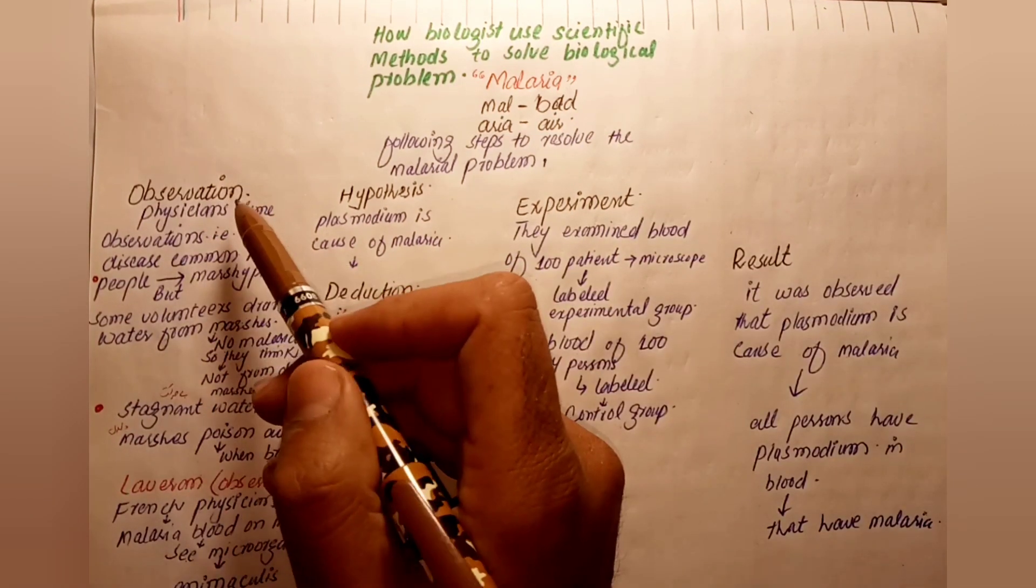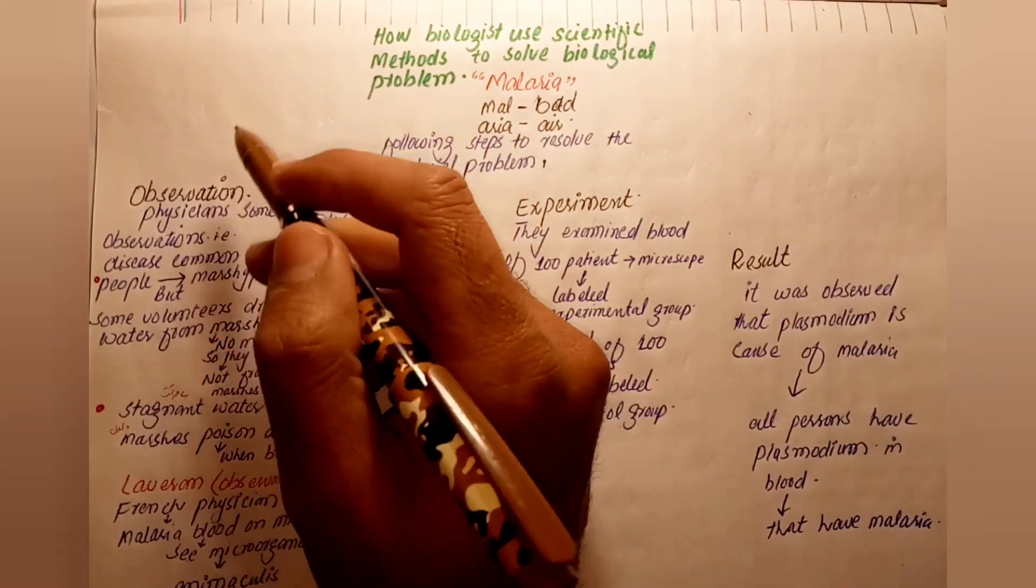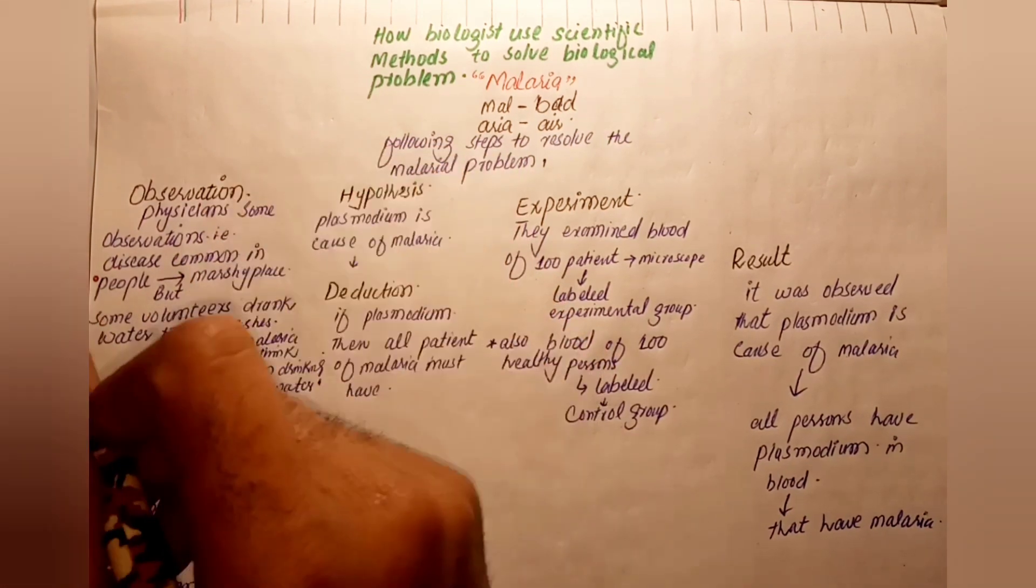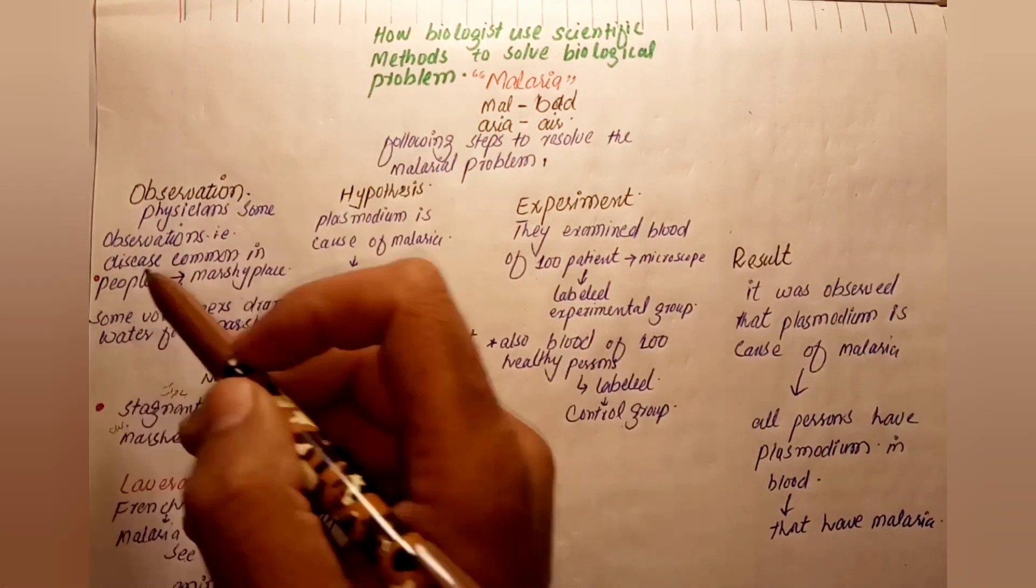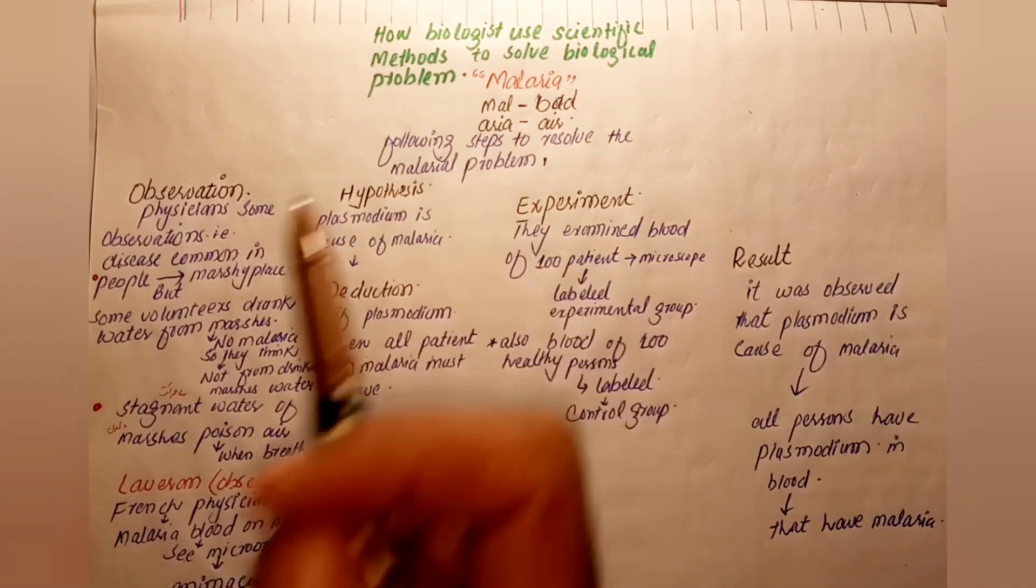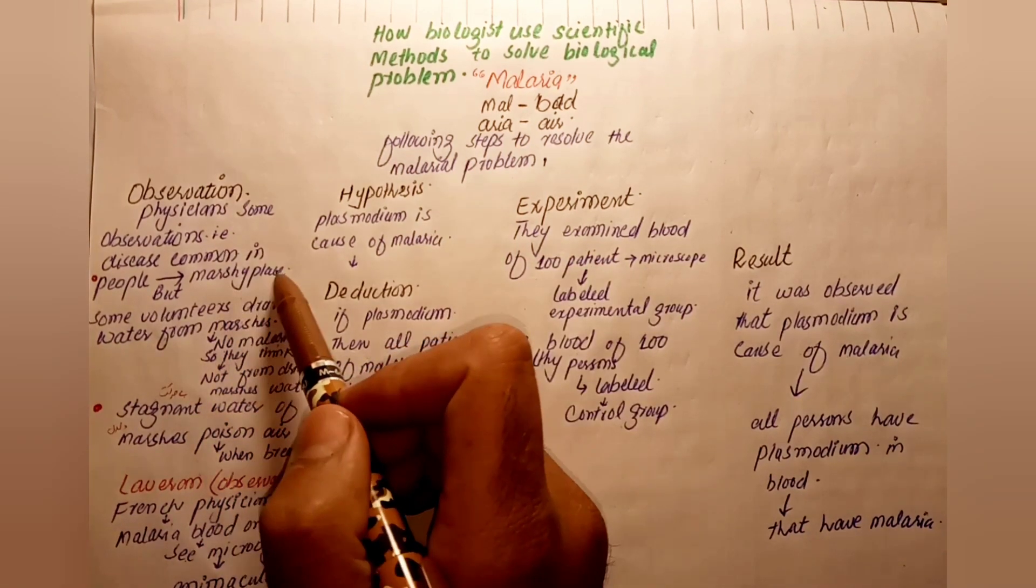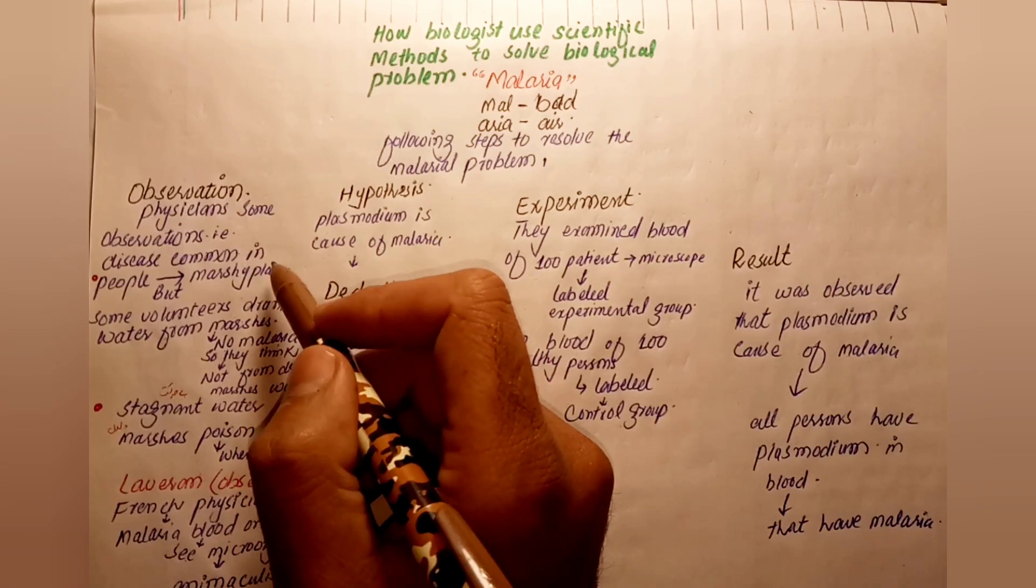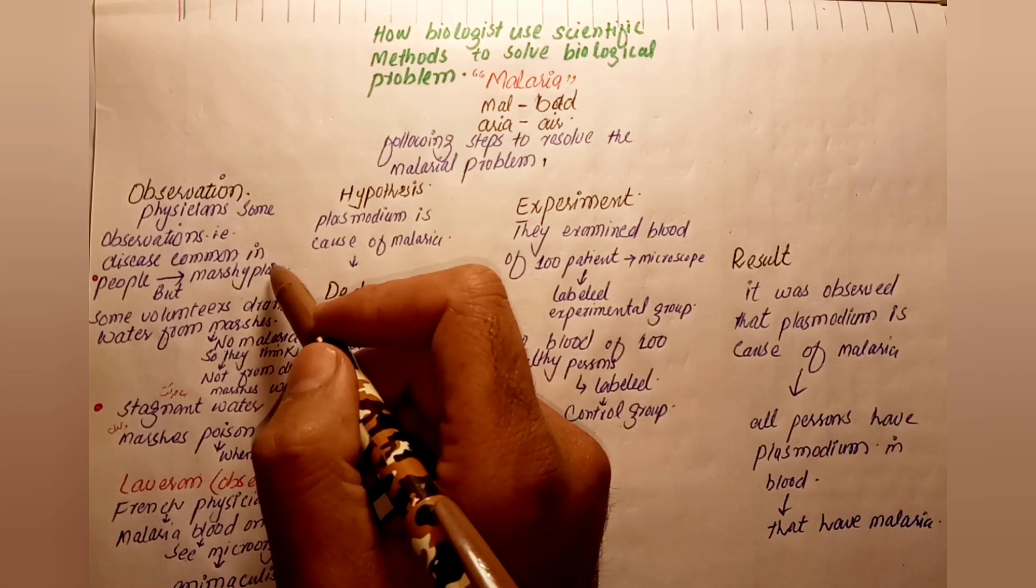The first step is observation. Physicians observed that people living near marsh places or swampy areas were more likely to get malaria.